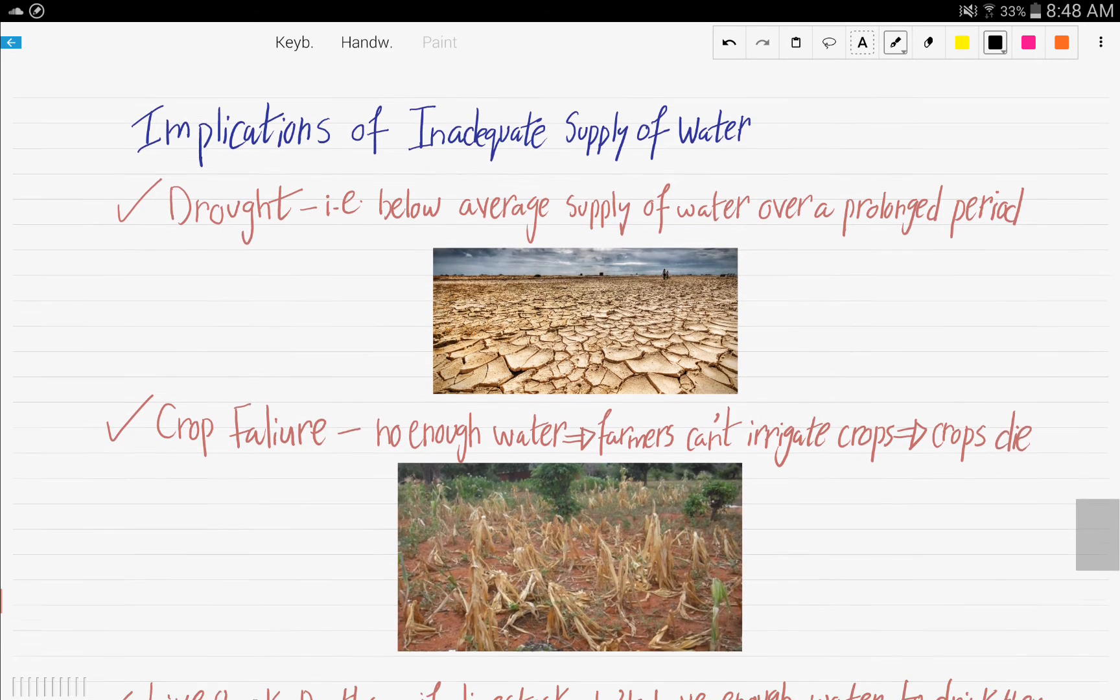Next, what are the implications of inadequate supply of water? The first implication is drought, and this is due to the below average supply of water over a prolonged period.